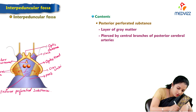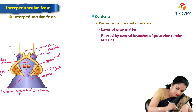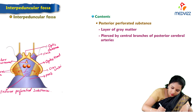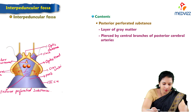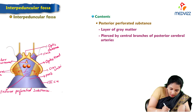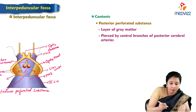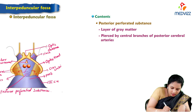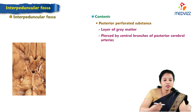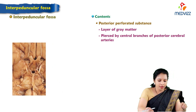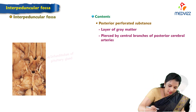We can also see the emergence of the third cranial nerve, the oculomotor nerve, arising from the interpeduncular fossa. The nerve seen on the lateral side, which is not a part of the interpeduncular fossa, is the fourth cranial nerve — the trochlear nerve, which can be seen in this picture. Here is the original specimen showing the interpeduncular fossa at the base of the brain.